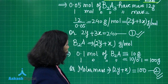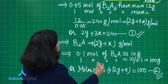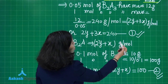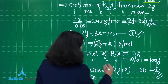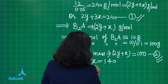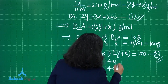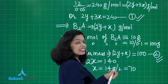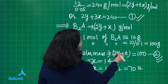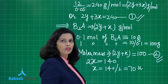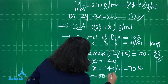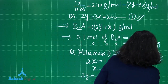We now have equation 1 (2y + 3x = 240) and equation 2 (2y + x = 100). Subtracting equation 2 from equation 1 cancels y, giving 3x − x = 240 − 100, so 2x = 140, therefore x = 70. The atomic mass of A is 70 u.